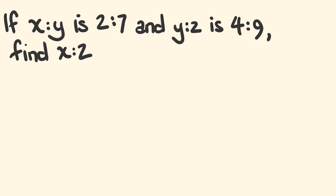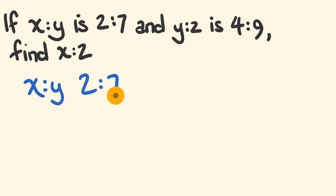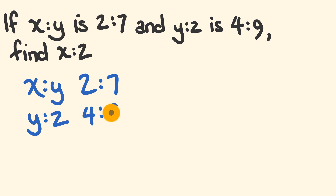Let's have a look at the second tip and trick, and this one is a bona fide trick. These are questions where we're comparing two ratios. An example is something like this: if x is to y is 2 is to 7, and y is to z is 4 is to 9, find x is to z. The way we attack these is pretty simple. We're just going to write this out again: x is to y is 2 is to 7, and y is to z is 4 is to 9.